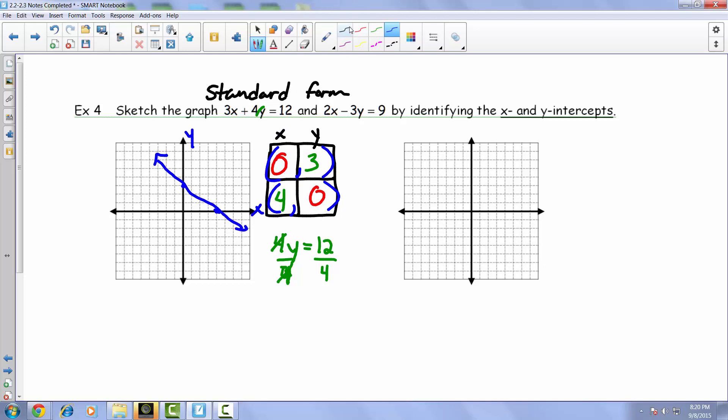Going ahead now and moving on to this 2x minus 3y is equal to 9. Let's go ahead and do our little, since it is in standard form, let's create our little box. Here's the cross. 0 is on the main diagonal.